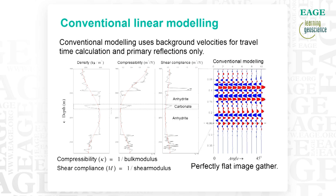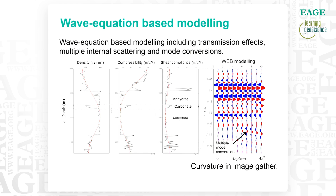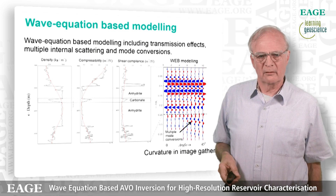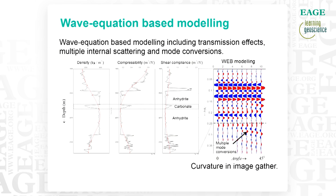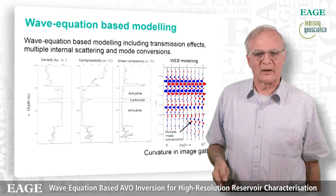Now we switch to the full wave equation-based modeling, and you see a number of things happening. You see data coming in after the last primary, which is indicative of a coda — that is, multiple scattering that happens inside the domain of interest and keeps ringing after the last primaries come in. You also see mode conversions, clearly indicated by the arrows pointing to a curved event. That is non-flatness in the image gather.